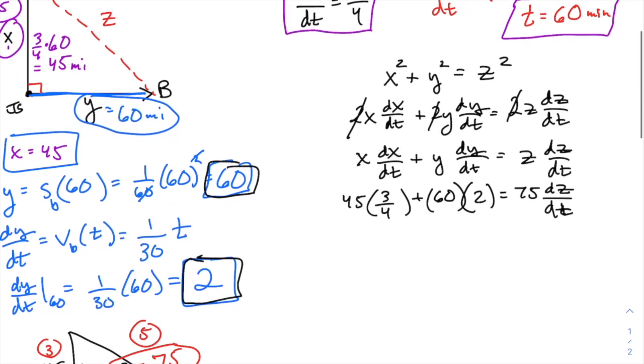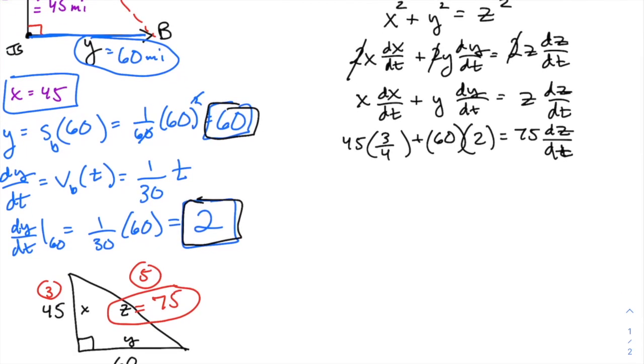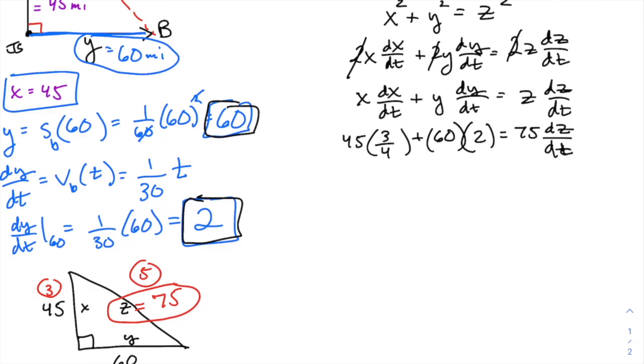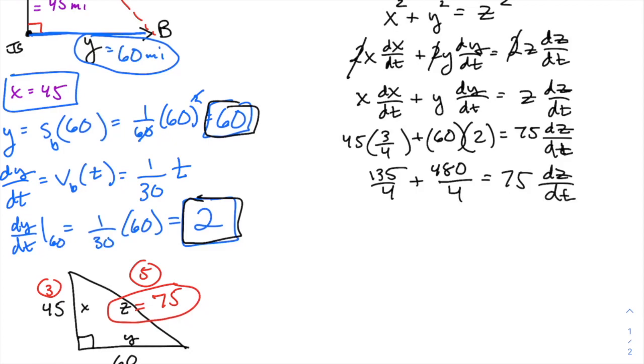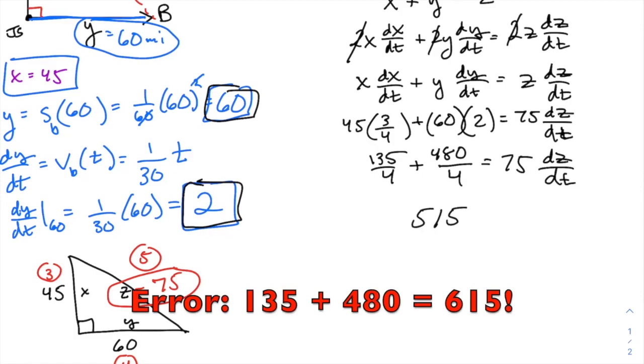So that is the last bit here. And now it's just simplifying. These numbers look a little messy and I'm trying to do this without a calculator, so here we go. 45 times three-fourths, that's going to be 135 fourths. And 2 times 60 is 120, but let's put that over 4, make a common denominator here. So 120 over 4 would be 480 over 4. Who made this problem? Oh wait, it was me. So 480 plus 135, that's going to be 615 fourths equals 75(dz/dt).